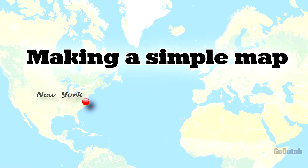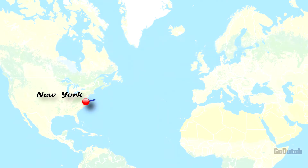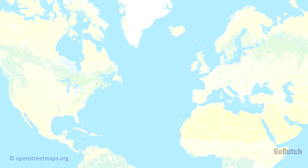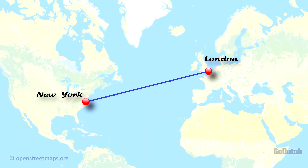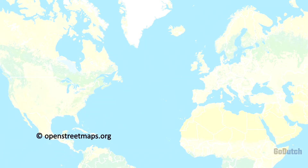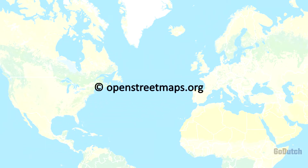Hey everyone, welcome to this tutorial in which I'm going to show you how to make this moving map. In this example, we're flying from New York to London and we're drawing that line on the map.